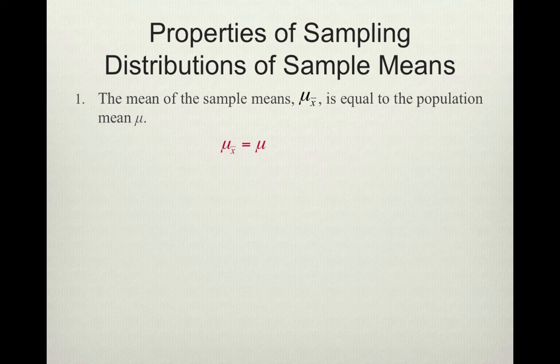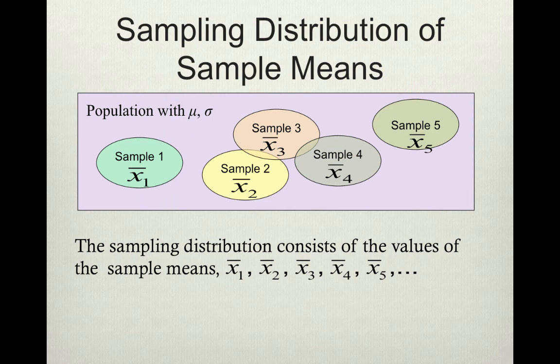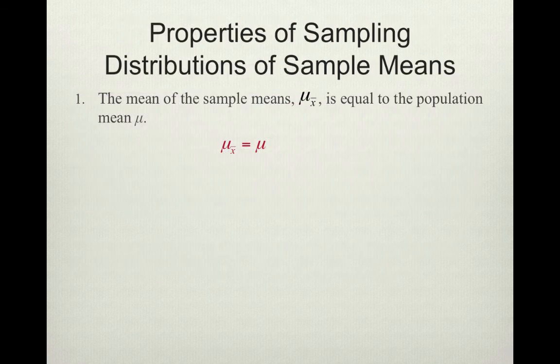Let's talk about properties of the sampling distributions of sample means. The mean of the sample means is equal to the population mean mu. If we average all these x-bars from our different samples — each sample has a sample mean — we're going to average all the sample means and come up with an average that is equal to our population mean. That's what those symbols say.